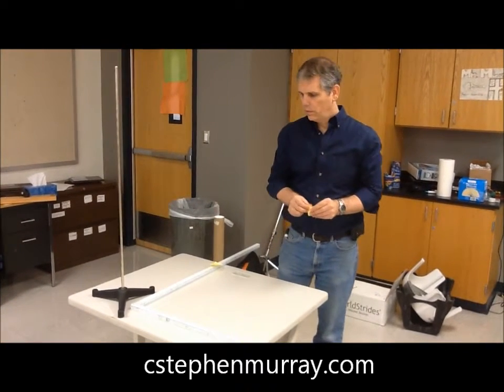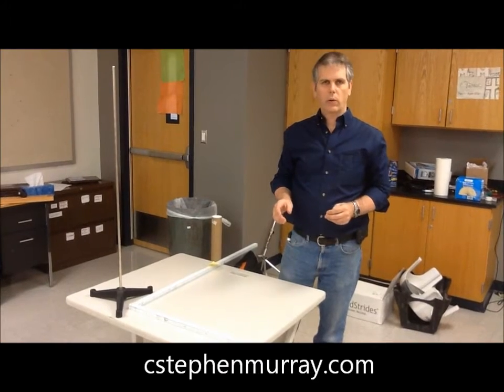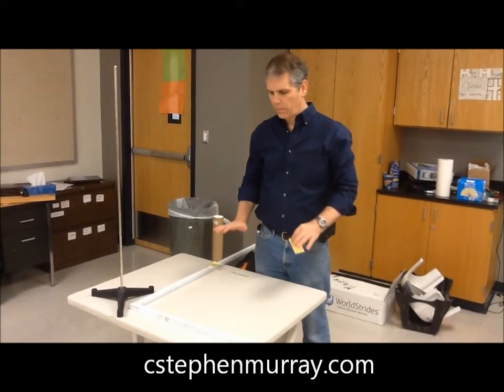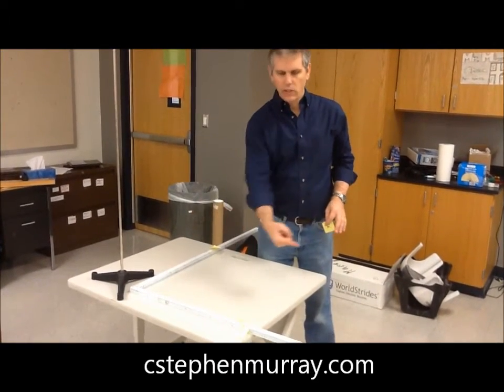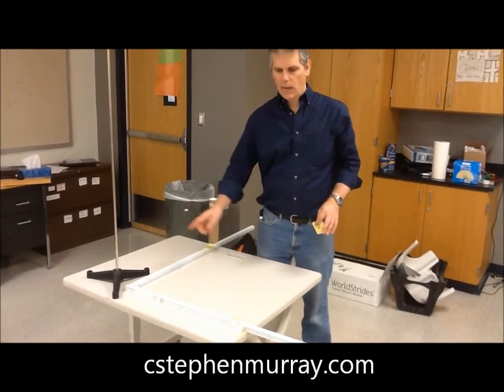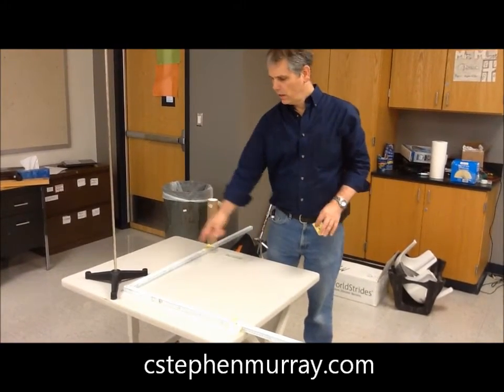First of all, to make sure we understand our coordinate system, if you're looking down on your paper, this way is the normal x-axis, the normal y-axis, but now we're calling that i-hat, j-hat.